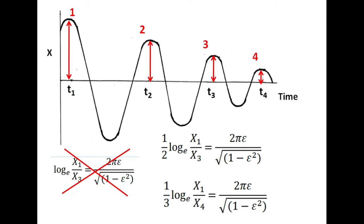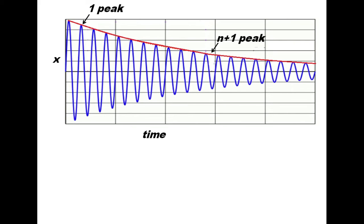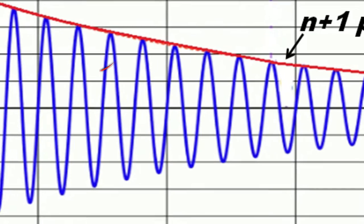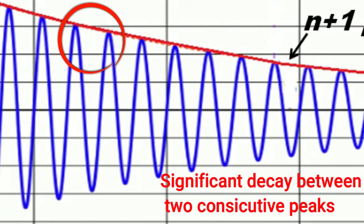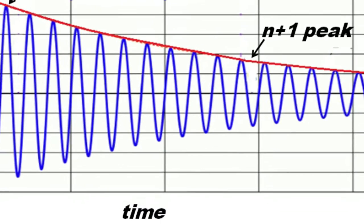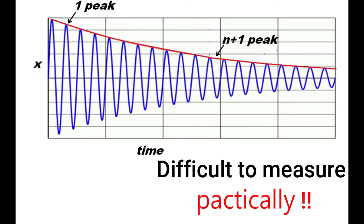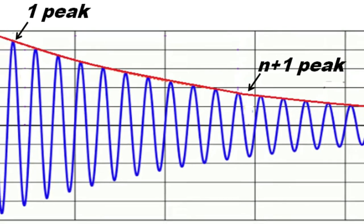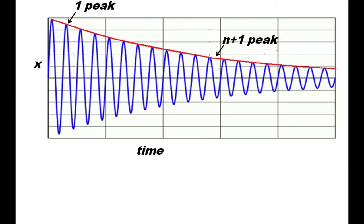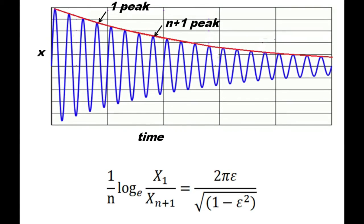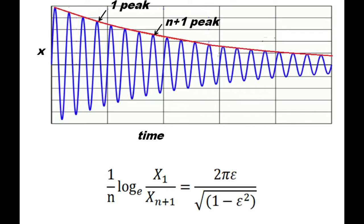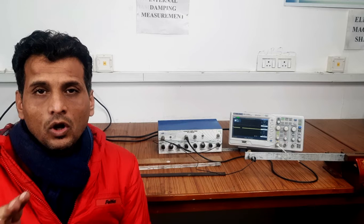This is really important when dealing with experimental data, because when taking experimental signals it is not easy to find a significant decay between two consecutive peaks. After one, two, or three peaks you may not see a significant gap to measure practically. So what we can do is take one peak and then after 5, 10, or 20 cycles — based on the data — select the second peak. Applying the formula: x1 is the first peak, x_(n+1) is the last peak, and 1/n is the factor for the number of cycles between the two peaks.